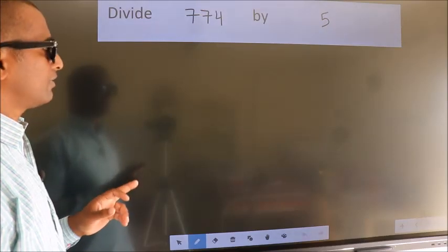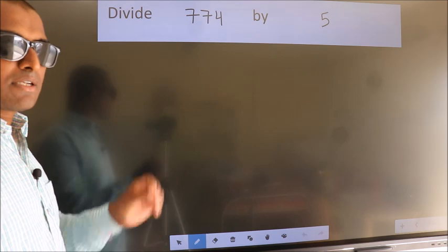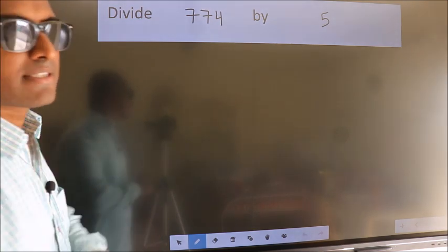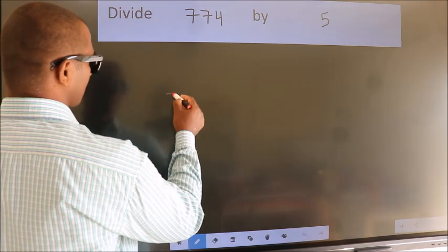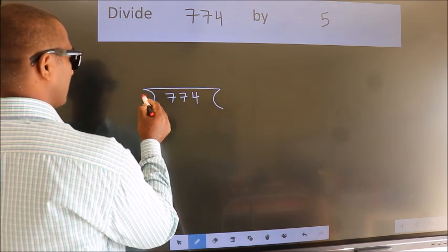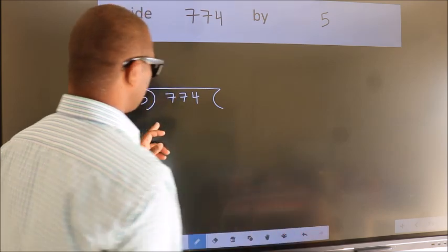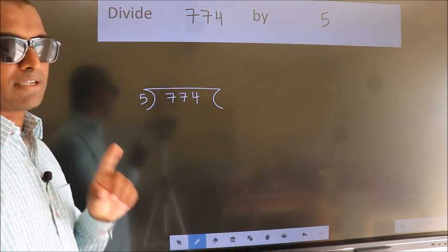Divide 774 by 5. To do this division, we should frame it in this way: 774 here, 5 here. This is your step 1.